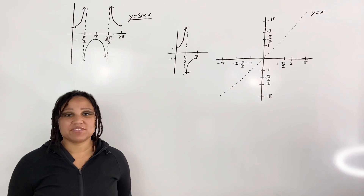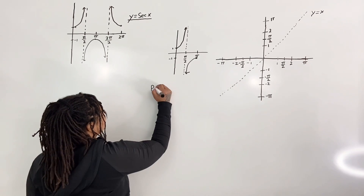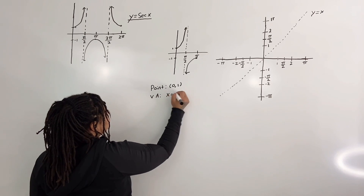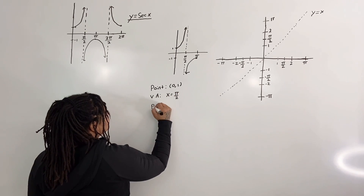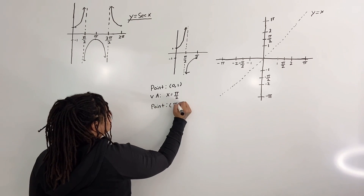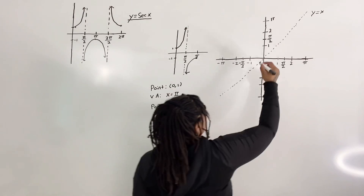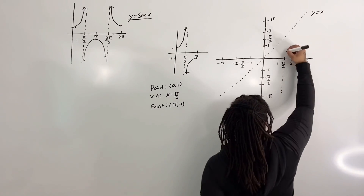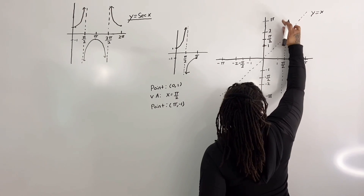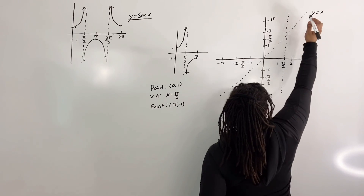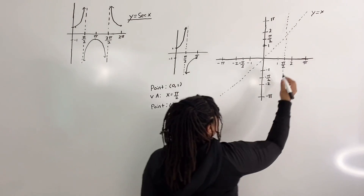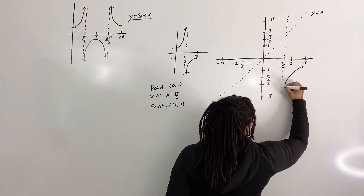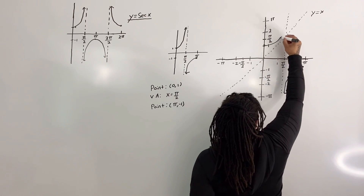Step three: draw the restricted graph of secant. It is important to note that we have a point at (0, 1), a vertical asymptote at x equals pi over two, and another point at (pi, negative one). So I'm going to put those points on the graph and swing the curve toward the asymptote.